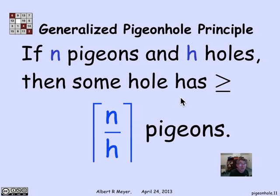And the pigeonhole principle can be formulated as saying at least one hole has to have greater than or equal to the average number. And that is the generalized pigeonhole principle.